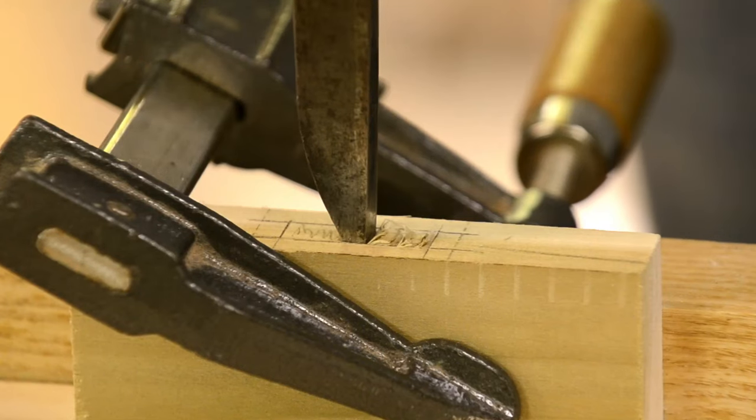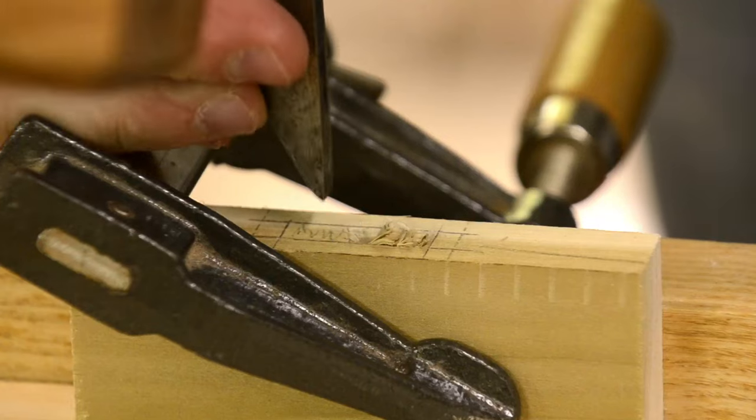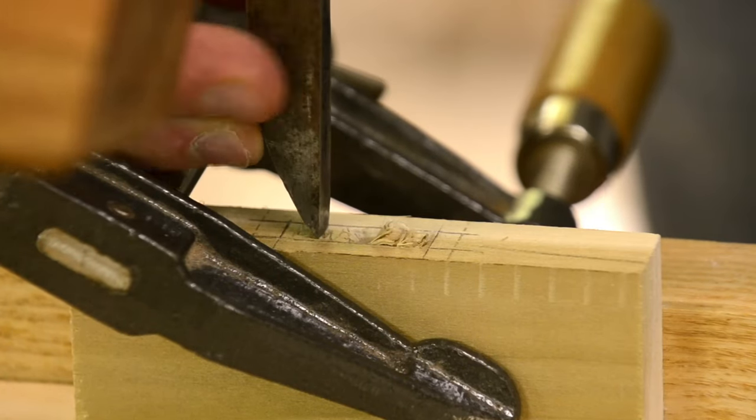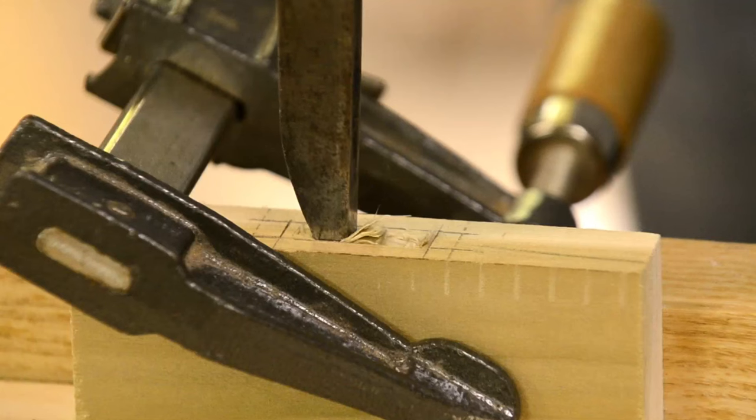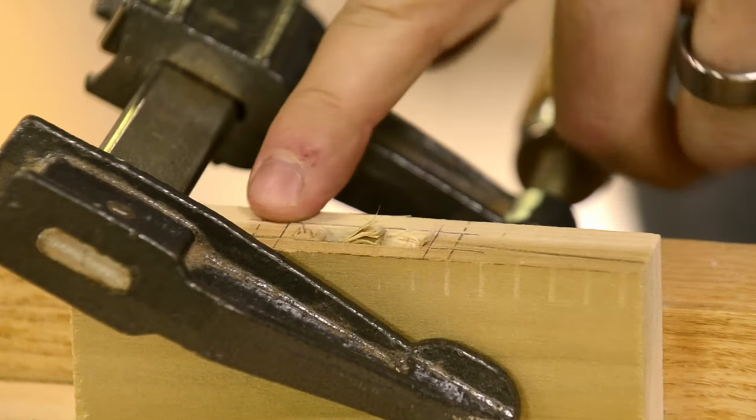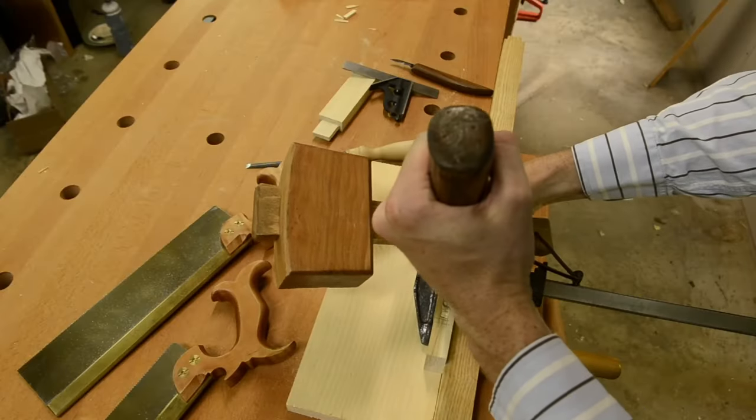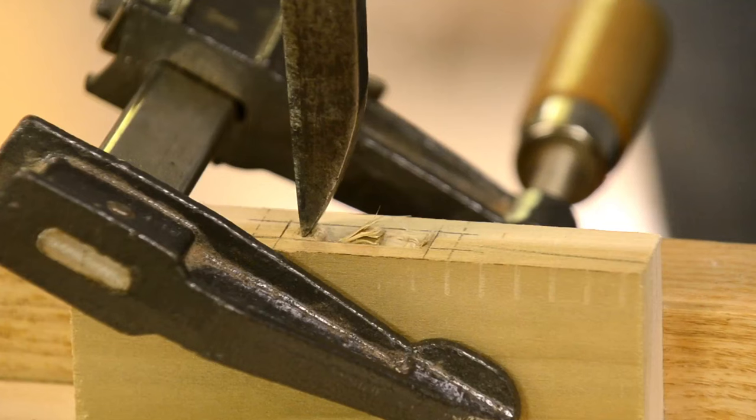So just walk it back a little bit towards the other end of the mortise. So stop before you get to the other end of the mortise. Flip the chisel around and walk back the other way.